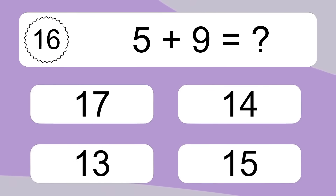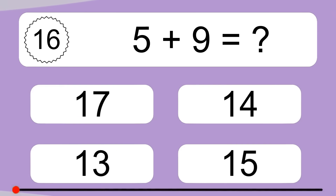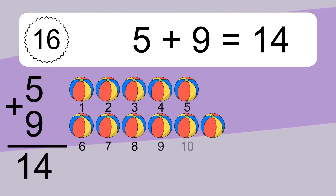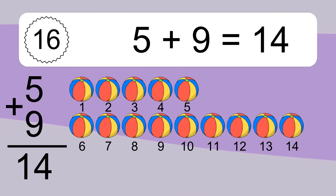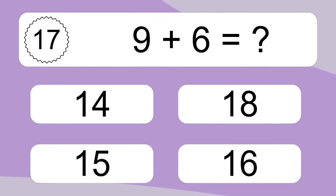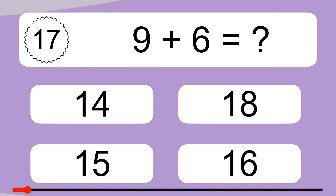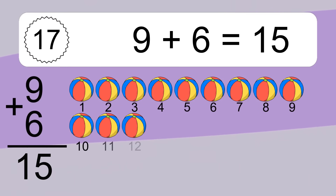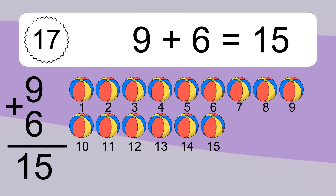5 plus 9 equals what? 5 plus 9 equals 14. Let's count it: 1, 2, 3, 4, 5, 6, 7, 8, 9, 10, 11, 12, 13, 14. 9 plus 6 equals what? 9 plus 6 equals 15.